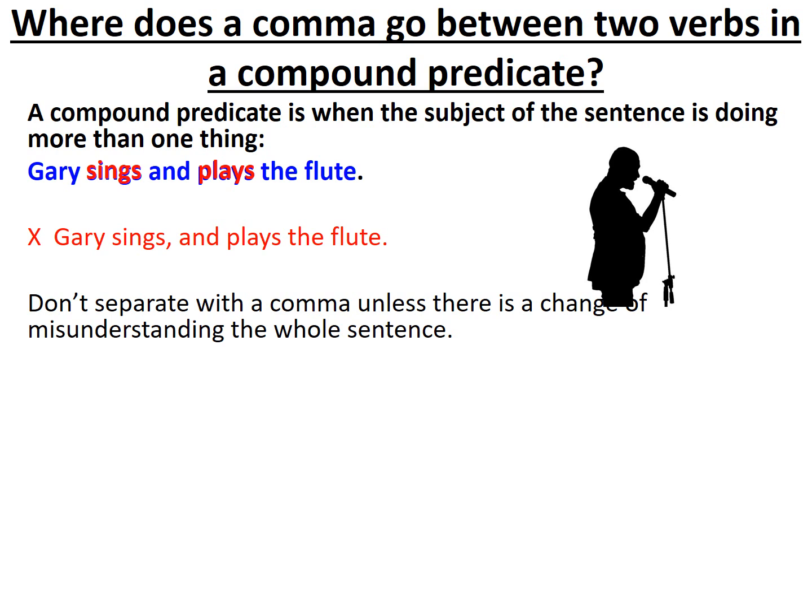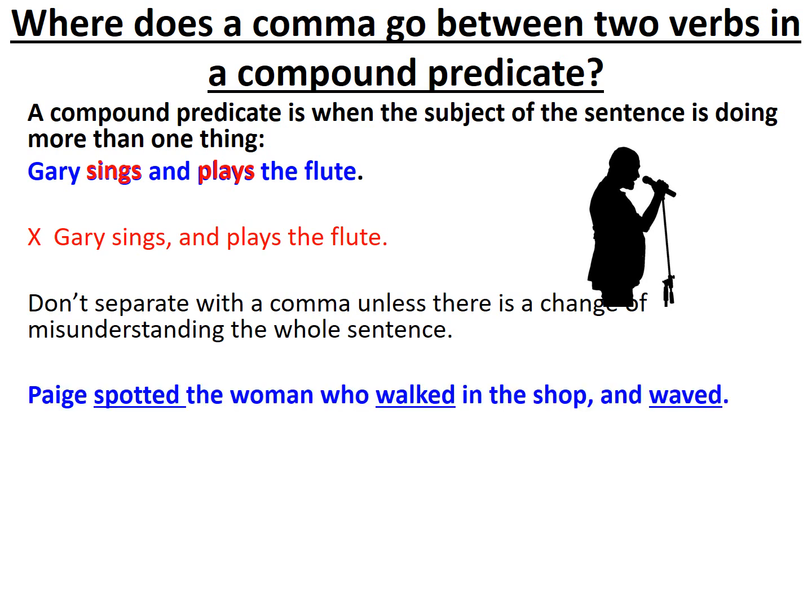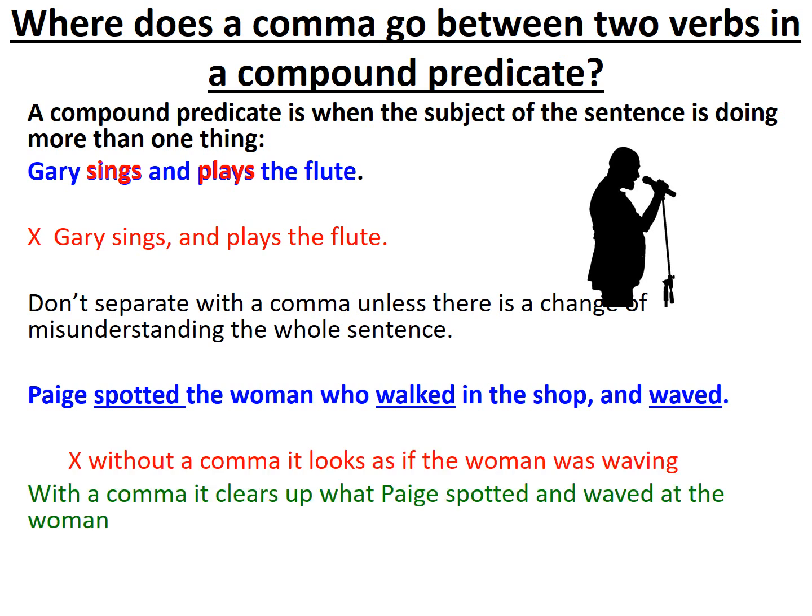I'd like you to work out with me as a detective what went on. Paige spotted the woman who walked in the shop, and waved. Paige noticed a woman who walked into the shop and she waved at that woman — Paige was the one who waved. If I took the comma away from after the word 'shop,' it looks as if the woman who was not Paige was waving at Paige. Yet with a comma, it clears up what Paige did — spotting the woman and waving at her.